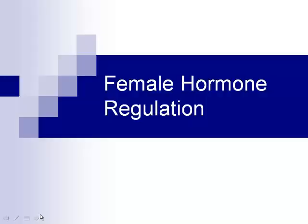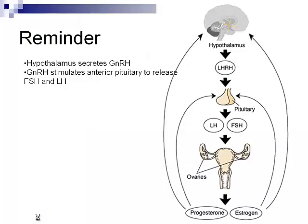Welcome back — this is part three of our reproductive system covering female hormone regulation. It's quite a bit more complicated than the male system, but the regulation starts almost identically. The hypothalamus still secretes GnRH, gonadotropin releasing hormone, which targets the anterior pituitary, causing LH (luteinizing hormone) and FSH (follicle stimulating hormone) to be released. That's where the similarities stop — females produce progesterone and estrogen.